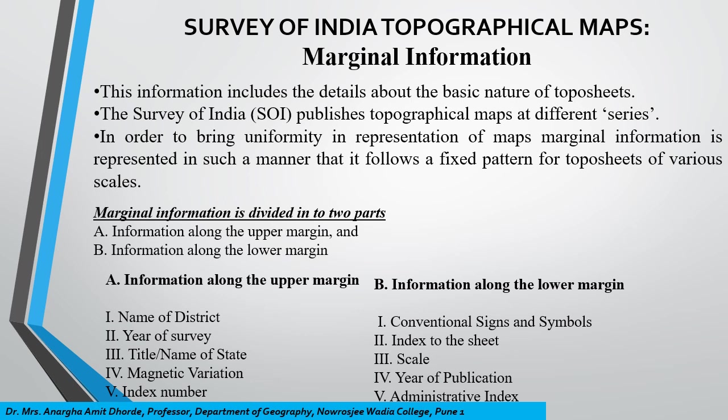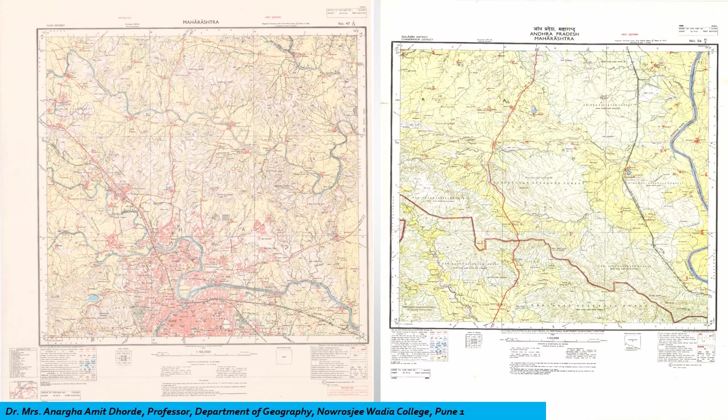The information along the upper margin covers basically the name of the district, year of survey, title or name of the state, magnetic variation, and index number. The information along the lower margin mostly covers conventional signs and symbols, index to the sheet, scale, year of publication, and administrative index.